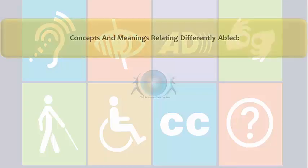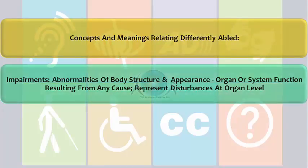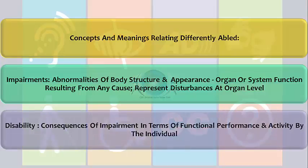Let us start with the concepts and meanings relating to differently abled. Impairment means abnormalities of the body structure and appearance and with organ or system function resulting from any cause; it represents disturbances at the organ level. Disability reflects the consequences of impairment in terms of functional performance and activity by the individual, representing disturbances at the level of the individual.